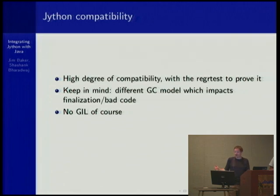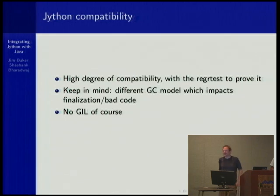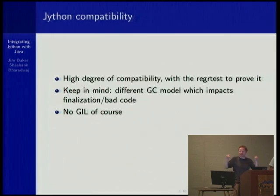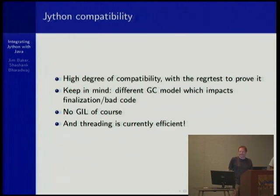Jython has no global interpreter lock. Sometimes I like to demonstrate what would happen if you tried `from __future__ import GIL` — we have a little Easter egg saying that's never going to happen. Well, actually we've been thinking about adding the GIL, but only in order to support the C extension API, so it wouldn't impact code that did not depend on a C extension API GIL. Just think: no GIL, never a GIL. And threading is currently efficient, unlike some of the examples presented with PyPy STM.